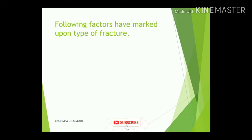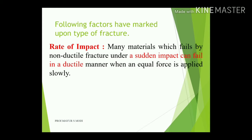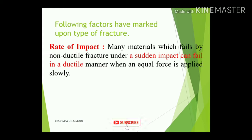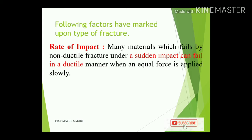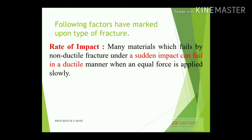Several factors affect the type of fracture. First, rate of impact: many materials which fail by non-ductile fracture under sudden impact can fail in a ductile manner when an equal force is applied slowly. If stress is applied suddenly, a ductile material may fail like a brittle material. But if the same load is applied slowly, the material first deforms elastically, then plastically, and then fails. Examples include glass and asphalt.